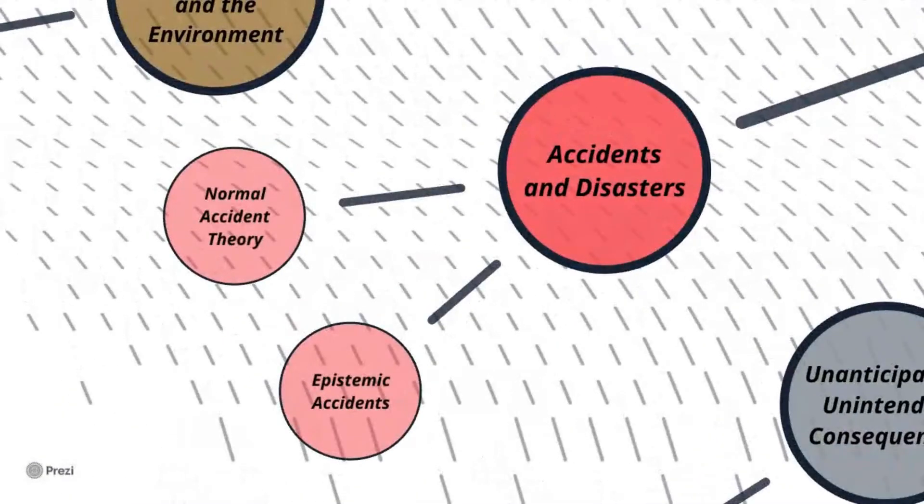Some more extreme cases of consequences can often lead to accidents as a result of a given technology. These accidents can be classified as normal, which is defined as inevitable and typically a one-time thing that's unlikely to occur in the future. The other option is epistemic accidents, which are likely to reoccur in the future unless we change our existing knowledge about that technology.